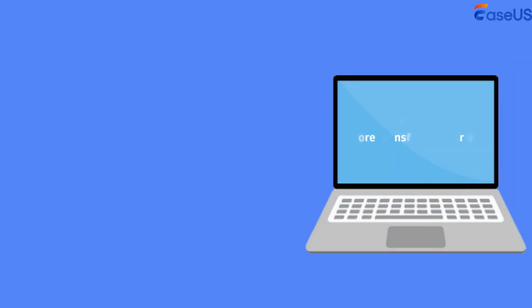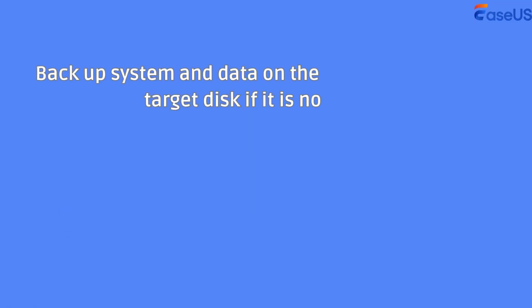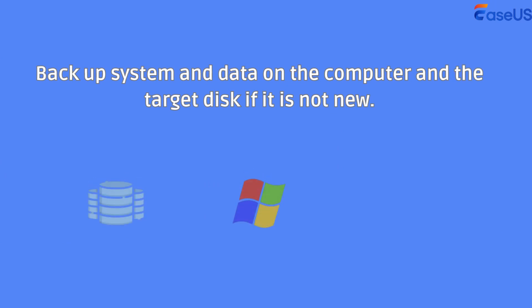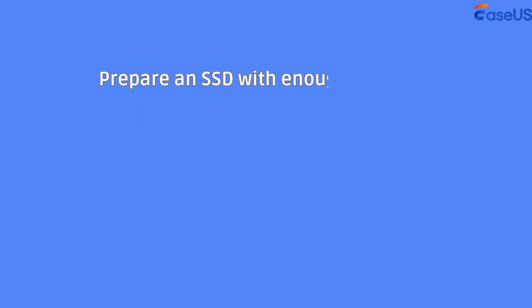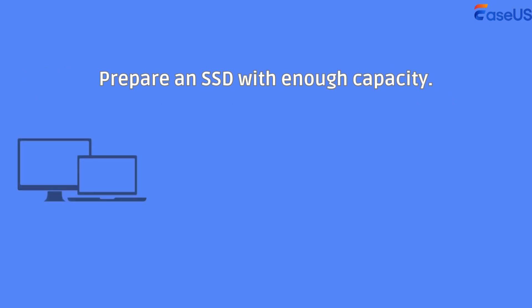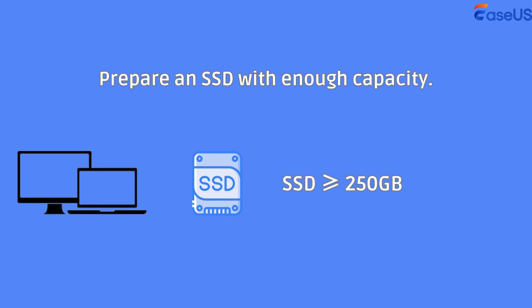Before transferring C drive to SSD, here are some tips you need to know. Remember to backup system and data on the computer and the target disk if it is not new. Prepare an SSD with enough capacity — for desktops and laptops, an SSD with a capacity of 250GB is preferred.